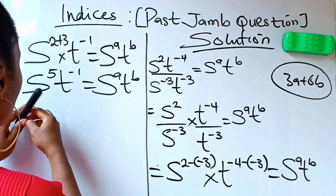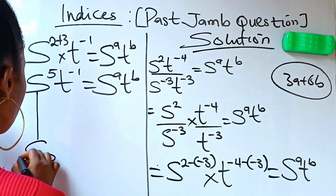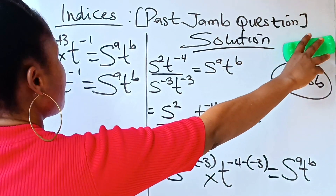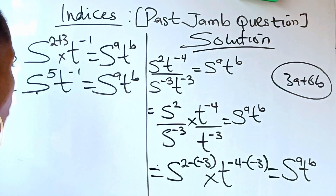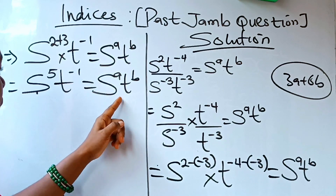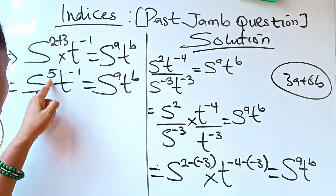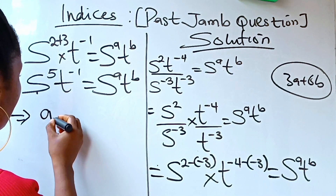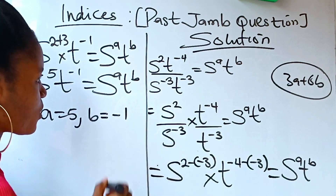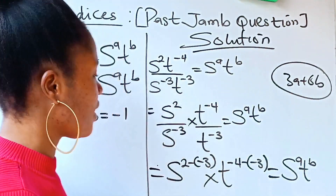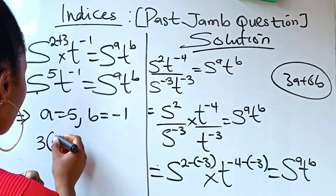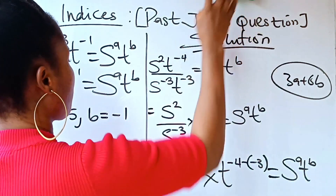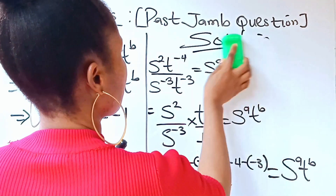Comparing s raised to the power of 5, t raised to the power of minus 1, with s raised to the power of a, t raised to the power of b, it means that a equals 5 and b equals minus 1. So we can write a equals 5 and b equals minus 1. Now we are asked to find 3a plus 6b.